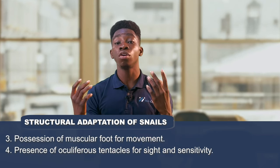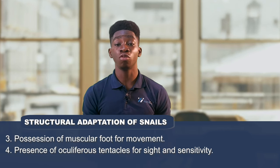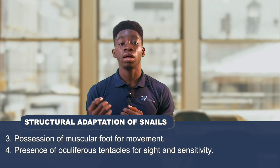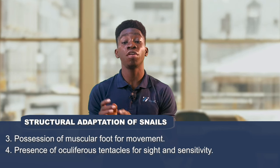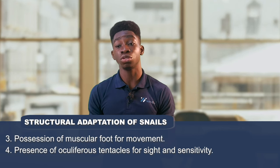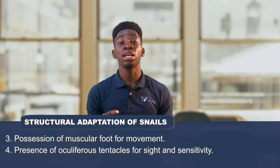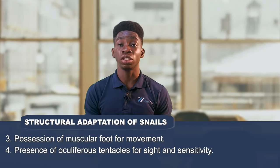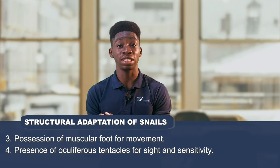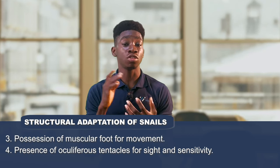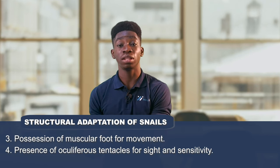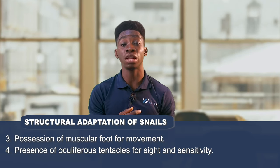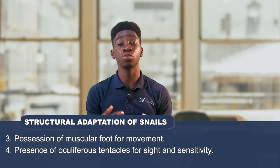Another structural adaptation of the snail is the possession of a muscular foot for movement, and the presence of oculiferous tentacles for sight and sensitivity. The tentacles are what the snail uses to see — unlike the octopus, whose tentacles are not oculiferous, snail tentacles are oculiferous for sight and sensitivity.